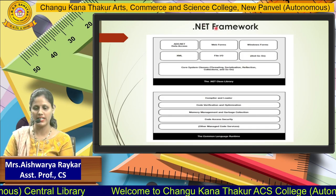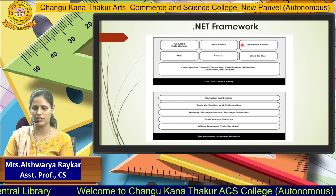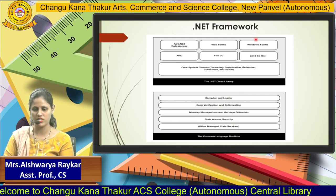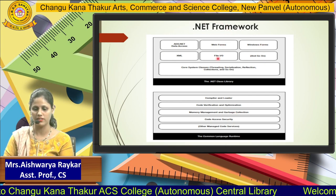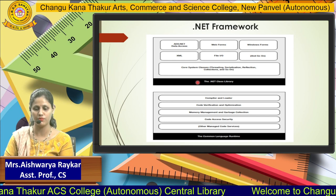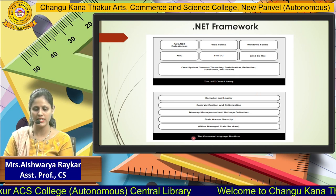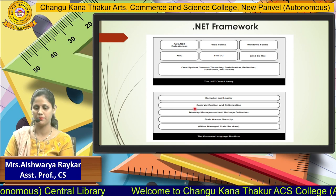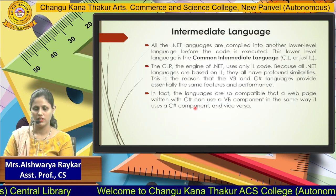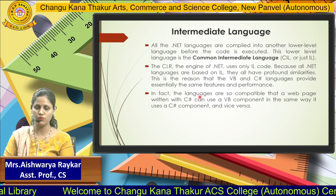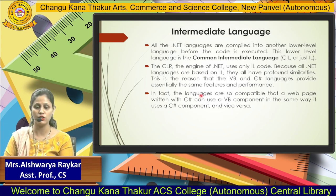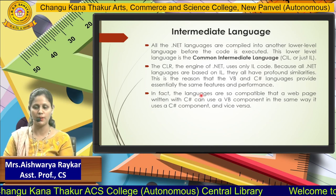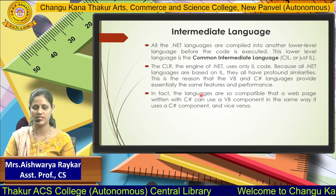This is the diagram which illustrates the .NET Framework. As we can see, the points which I have explained are included here. The two basic components of .NET Framework are the .NET Class Library and CLR, that is Common Language Runtime. Now, intermediate language — what do we mean by intermediate language? Basically it is a lower level language, and all the .NET languages are compiled into another lower level language before the code is executed.